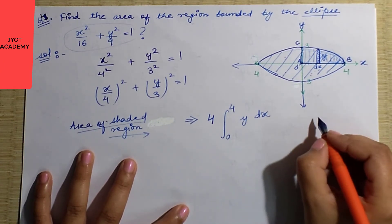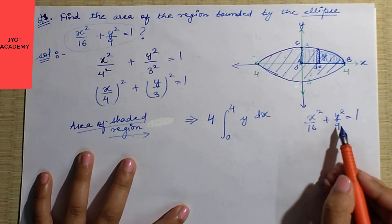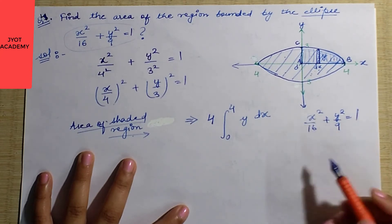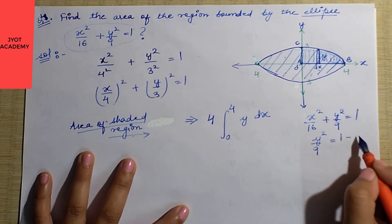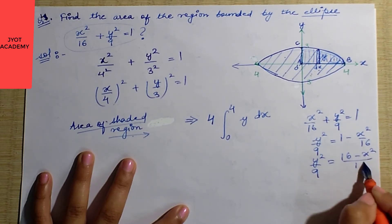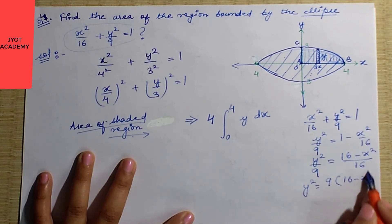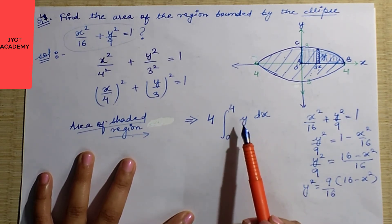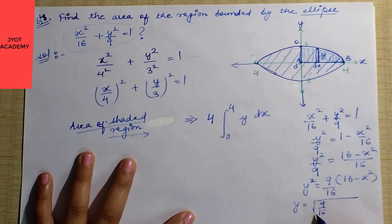Now let's work on the equation. We need the value of y. Starting from the ellipse equation, shift x squared upon 16 to the other side: y squared upon 9 equals 1 minus x squared upon 16. Taking LCM gives y squared upon 9 equals (16 minus x squared) upon 16. Shifting 9 across: y squared equals 9 times (16 minus x squared) upon 16. Everything is under the square root.